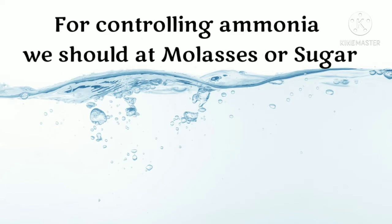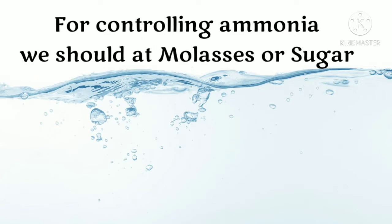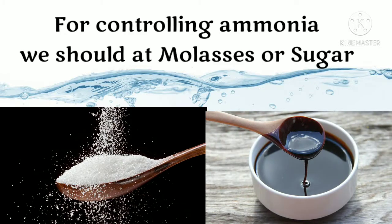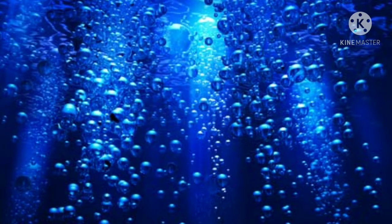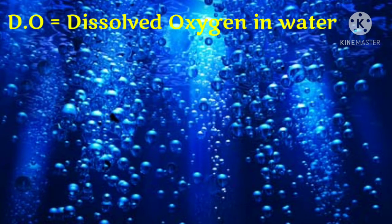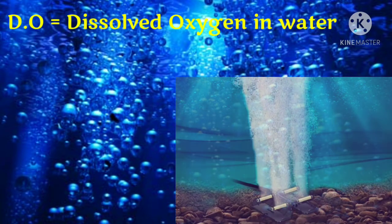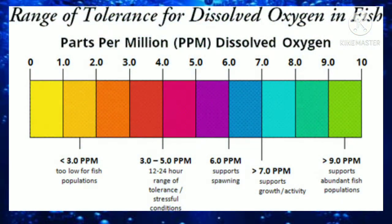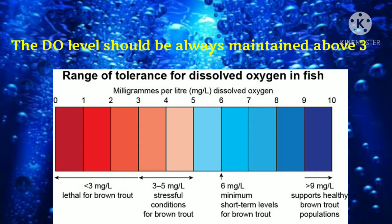For controlling ammonia, we can use raw sugar or molasses. The next one is DO level. DO means dissolved oxygen, which helps a lot for fish to survive in bio-floc. The DO level should be maintained above 3.